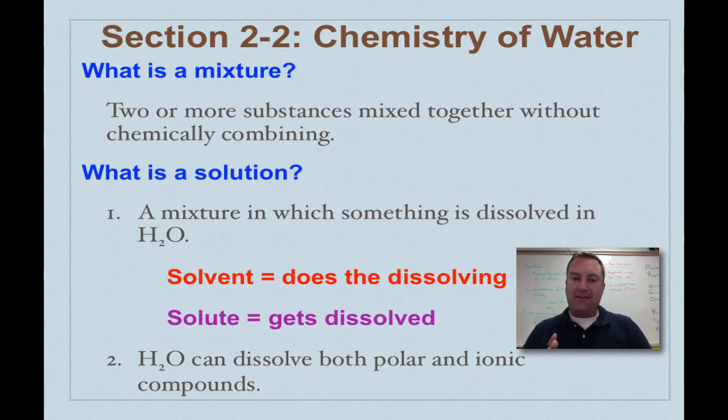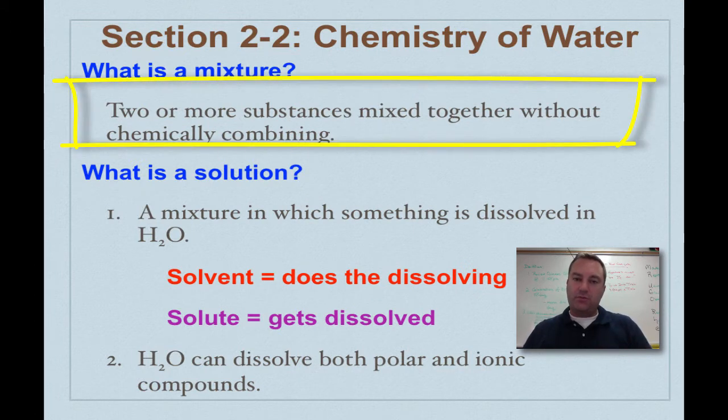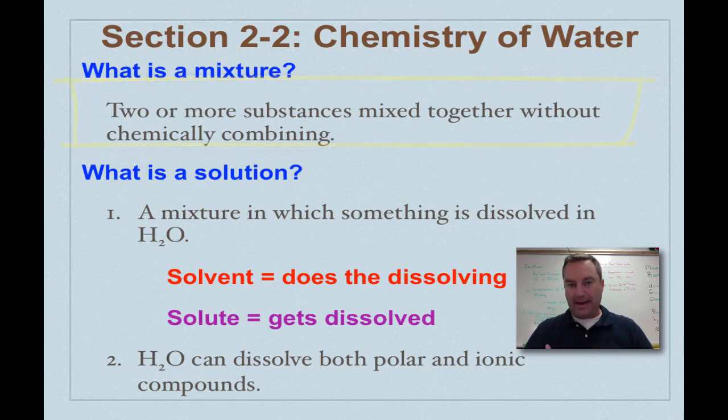We're going to talk about mixtures. A mixture is basically two or more substances mixed together without chemically combining, because if they were going to chemically combine we'd just call them a compound. When we talk about a mixture, we can actually separate the components if we desire.